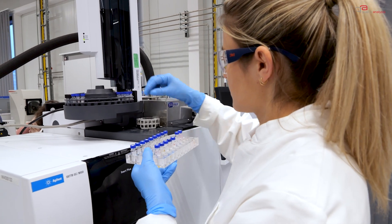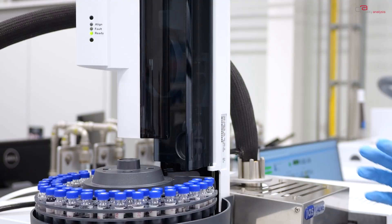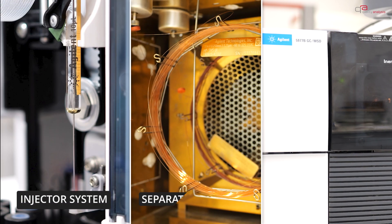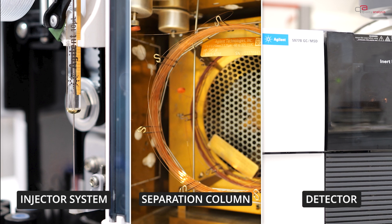A gas chromatograph consists of three main components that perform different functions during the analysis: the injector system, the separation column, and the detector.